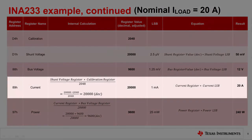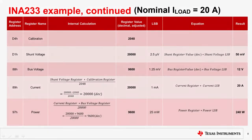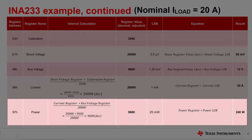The current register reads 20,000 in decimal, and when multiplied by the 1 milliamp current LSB, we get 20 amps of current as expected. The power register reads 9600 in decimal, and after multiplying by the 25 milliwatt power LSB, is equal to 240 watts of power. This is equal to our expected value of 20 amps times 12 volts.